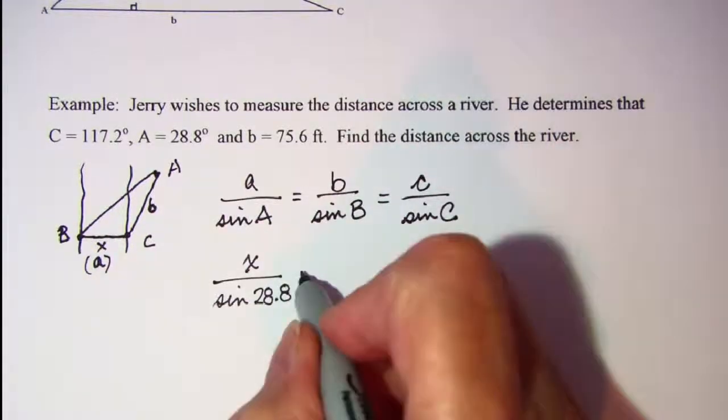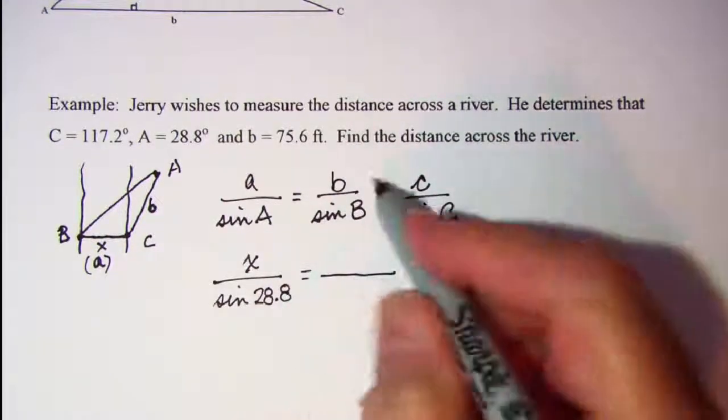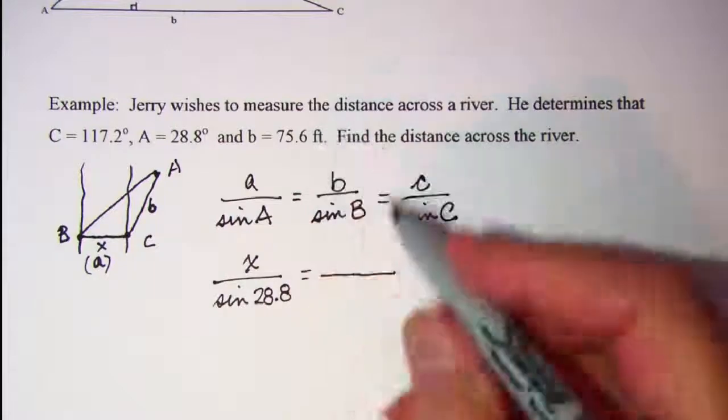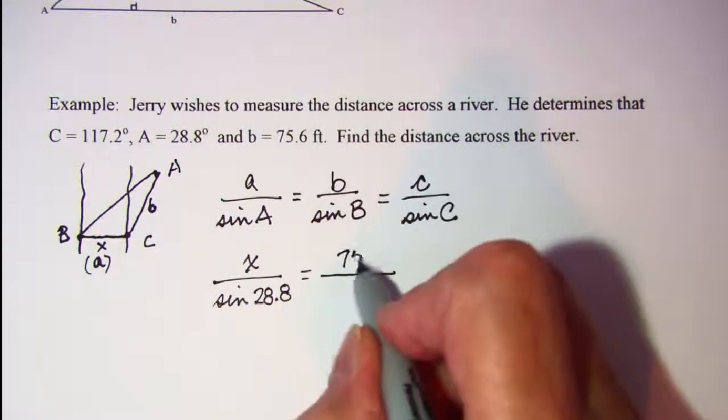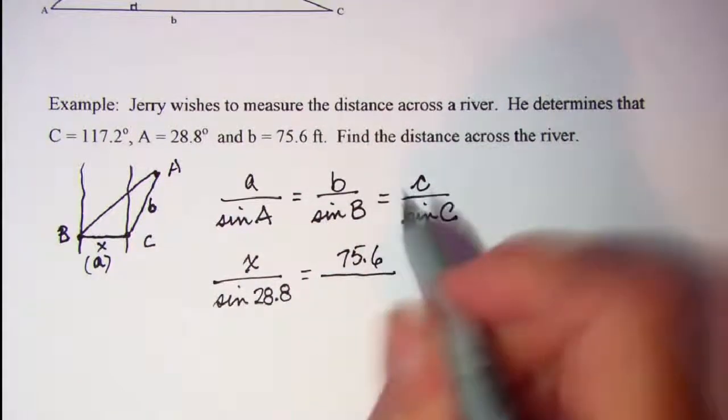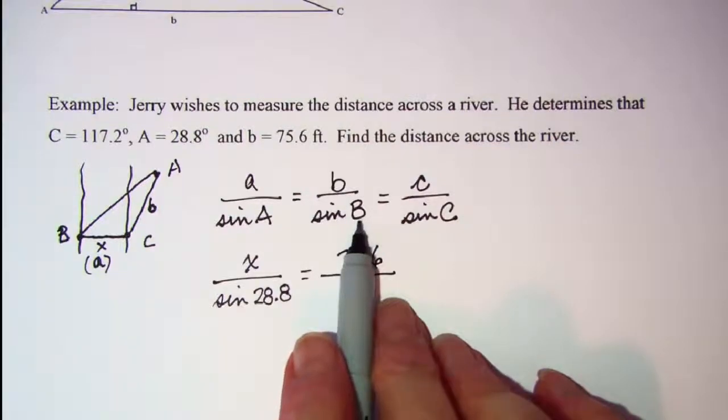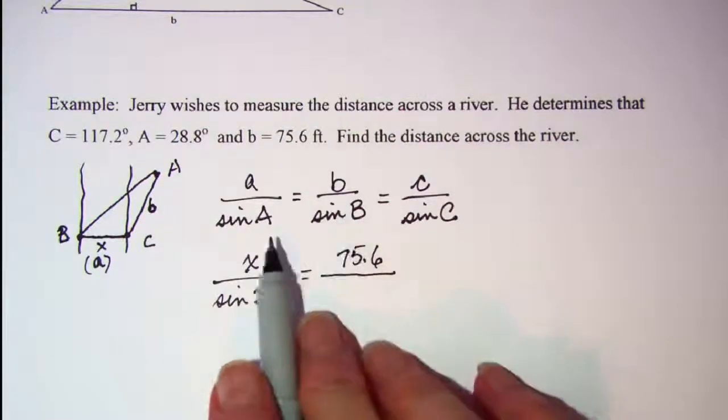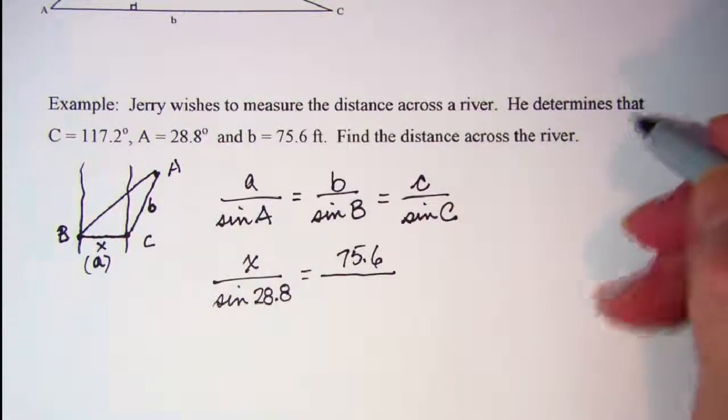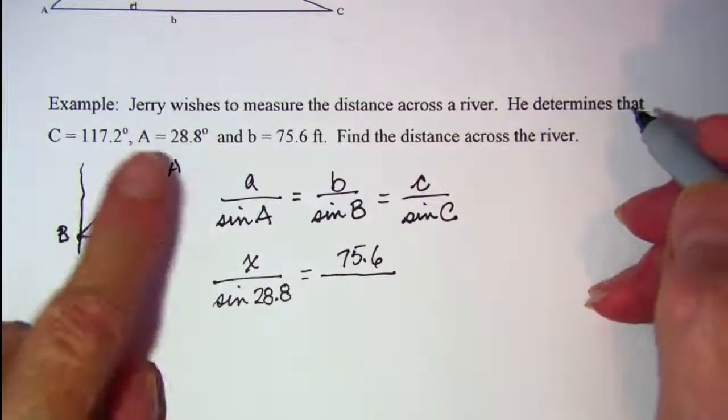And then we have B is 75.6, so we need to find angle B.